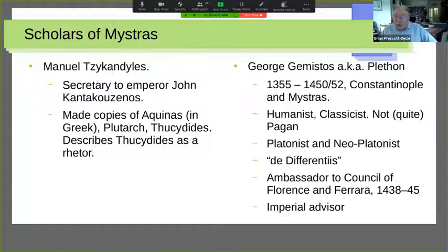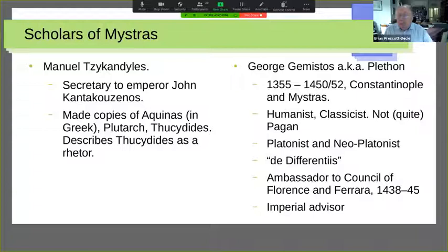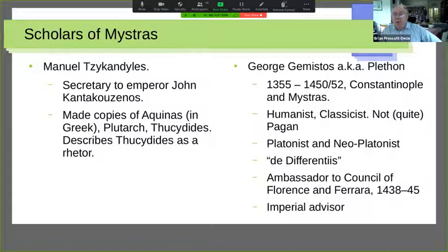Plethon believed more in Neoplatonism — Porphyry, Iamblichus, and so on — than in pure Platonism, but was thoroughly familiar with both. He wrote at least one important manuscript, 'De Differentiis,' on the differences between Aristotle and Platonic or Neoplatonic thought, which became important because it provided access for a range of scholars to the basic principal differences between Aristotelian and Socratic thought. He was the official ambassador under the patriarch to the Council of Florence and Ferrara.